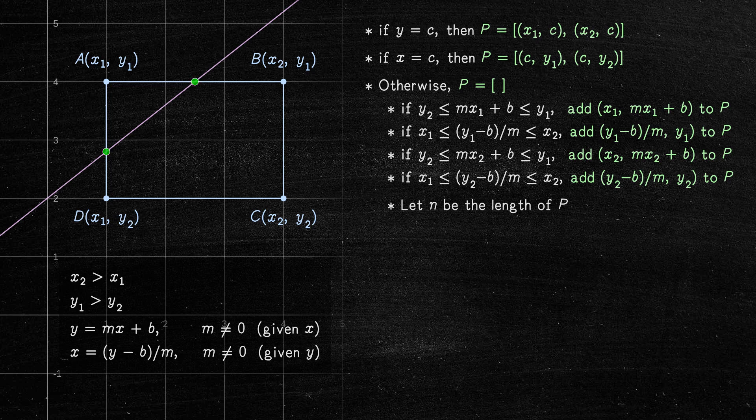If n equals 4, then the line intersected two opposite corners, so the two points of intersection are as follows.